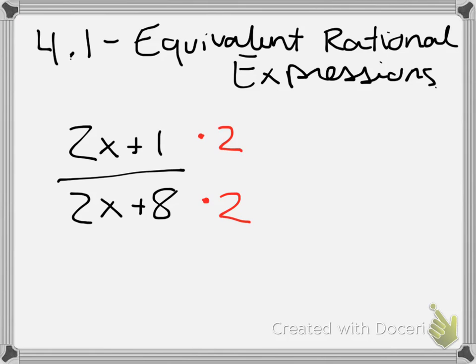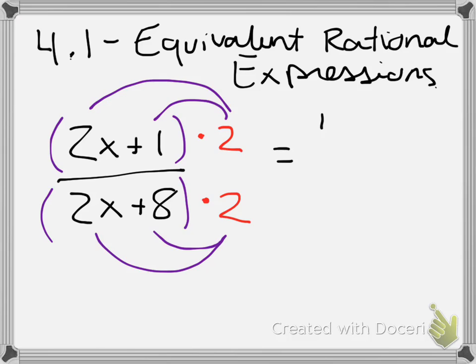The thing that's kind of important or a little bit tricky about this is that we have to remember that when we multiply something, it gets distributed to everything inside the brackets. So it's not going to become 4x plus 1, it's going to become 4x plus 2 on the top. In the denominator, we get 4x plus 16. So that's the only part that's really tricky about it.